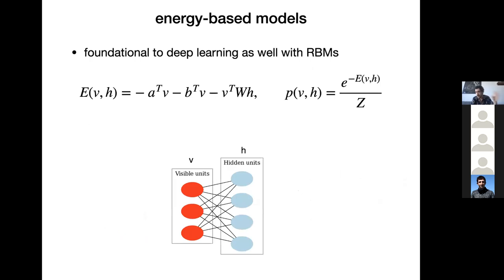Energy-based models have been very important to the history of machine learning. Some of the first successful generative models for high-dimensional data were energy-based models, in particular restricted Boltzmann machines, which were widely studied in the 80s, 90s, and 2000s, most famously by Jeff Hinton. One neat thing about EBMs is that you can represent a very complex amount of uncertainty using such a simple energy function.